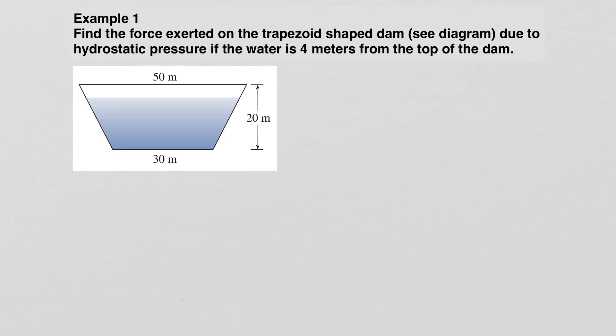Let's take a look at the following example. We want to find the force exerted on a trapezoid-shaped dam due to hydrostatic pressure if the water is four meters from the top of the dam. The dam is 20 meters tall, 50 meters wide at the top, and 30 meters wide at the bottom.